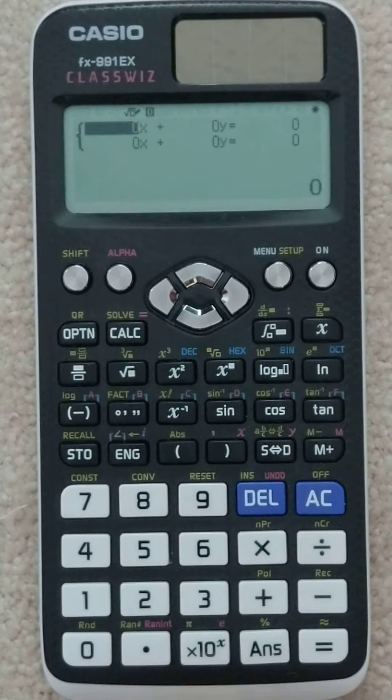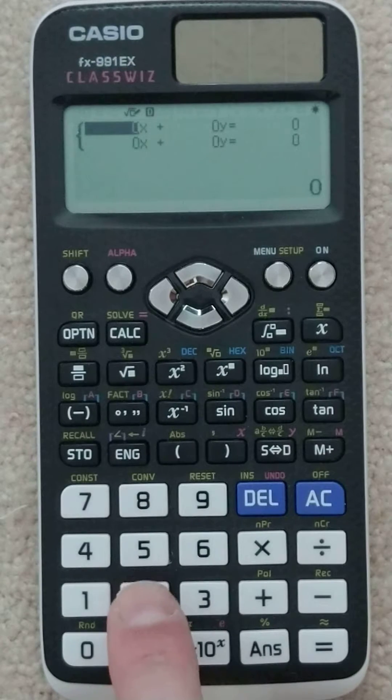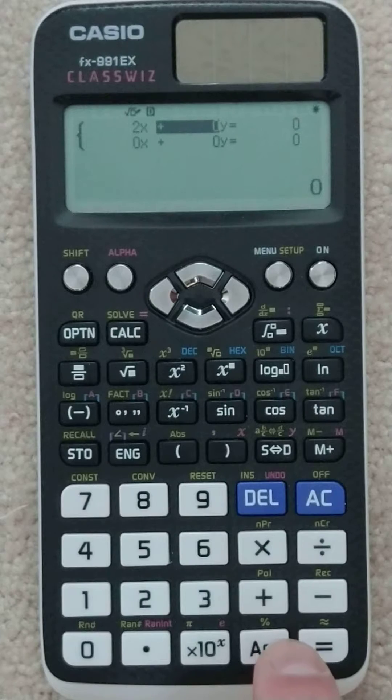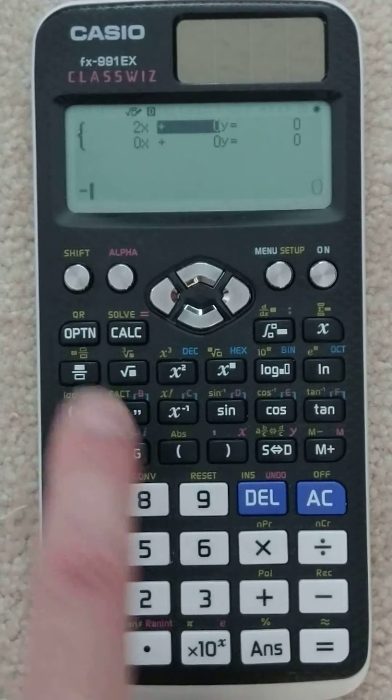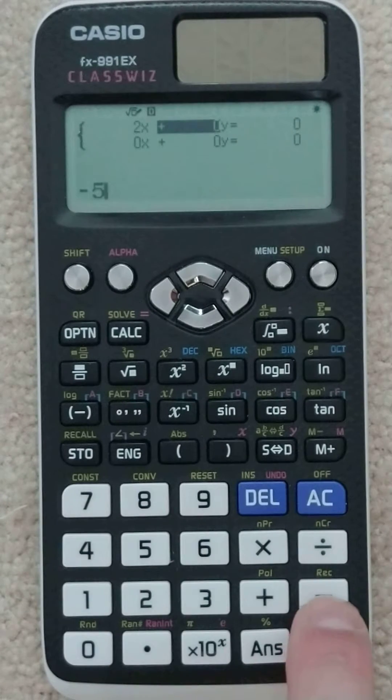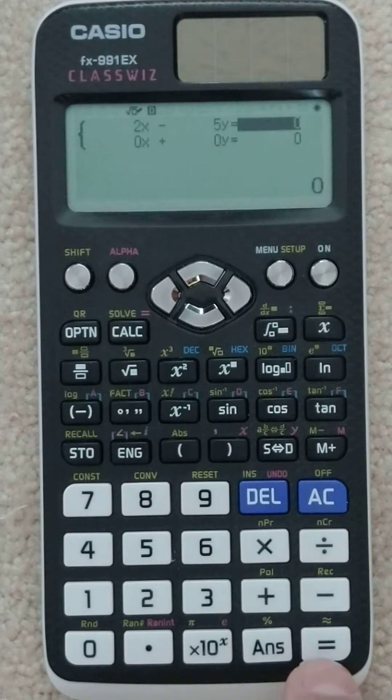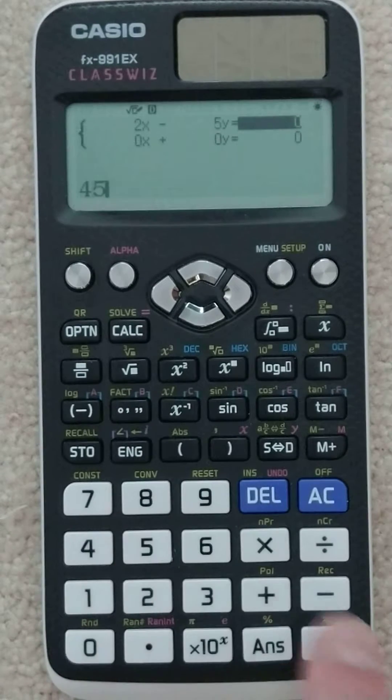Now I'm going to put in my coefficients. So we had 2x, we had minus 5y, so we do negative 5. Not this minus, but that negative 5. Enter, so I'm hitting equal each time. 45, equal.